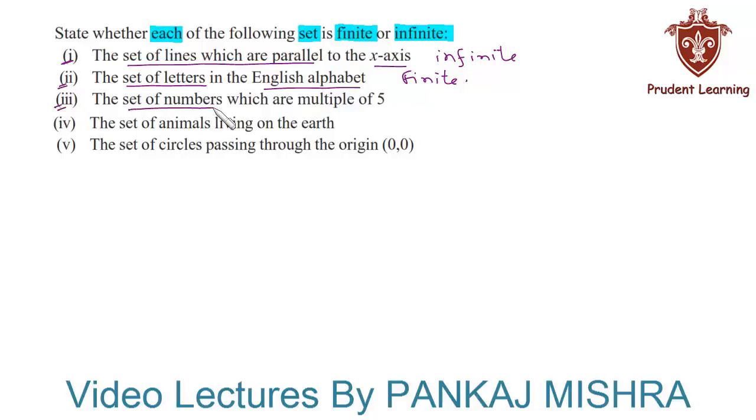The set of numbers which are multiple of 5. If you wish to write the given set in roster form, you'll write something like 5, 10, 15, and so on. We know that there are infinite numbers that are multiples of 5, so this set will consist of infinite elements. Hence we will say that the given set is an infinite set.